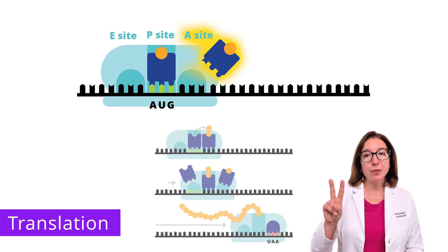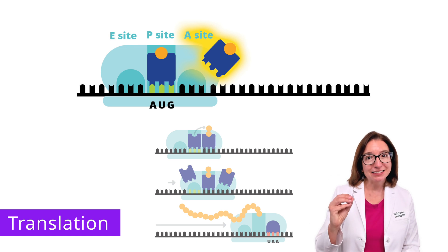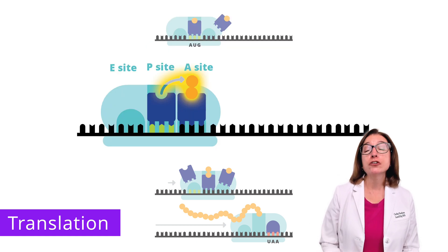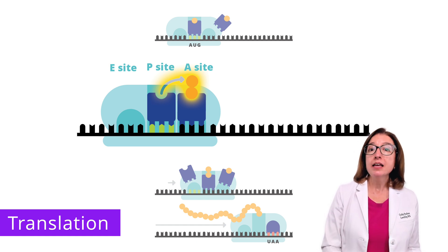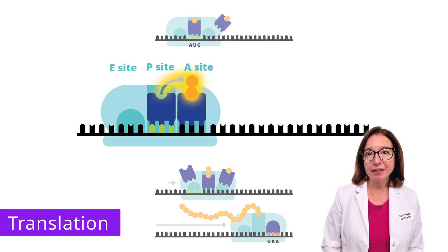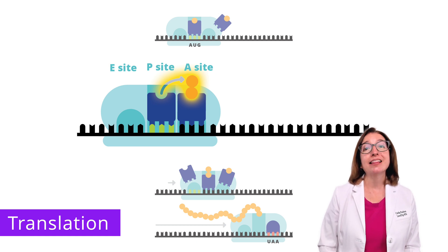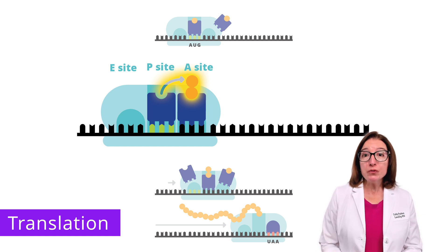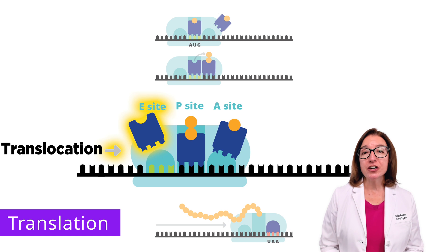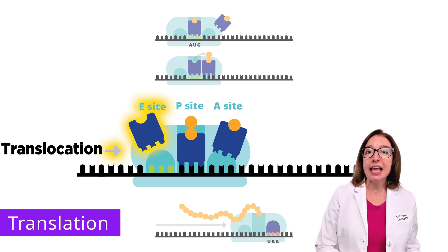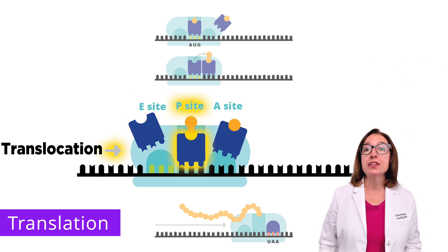Next, a tRNA carrying the second amino acid pairs with the next codon on the mRNA strand at the A site. The first and second amino acids are joined via a peptide bond. Methionine, which is the first amino acid, is released by the initiator tRNA but remains bound to the amino acid of the second tRNA, which is at the A site. The ribosome then moves forward by one codon, which is referred to as translocation. The initiator tRNA shifts to the E site and then detaches — E for exit.